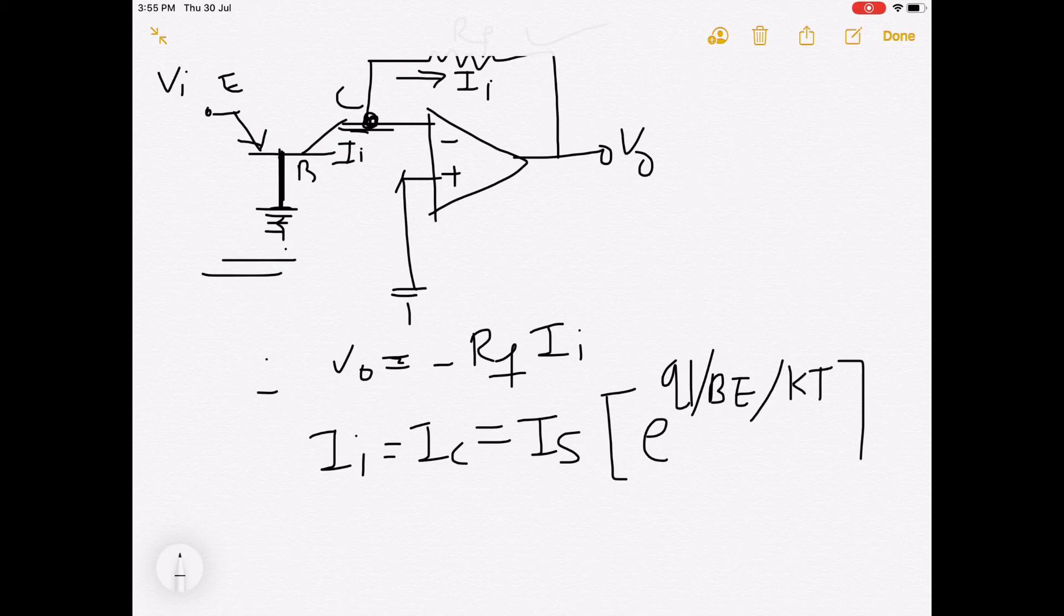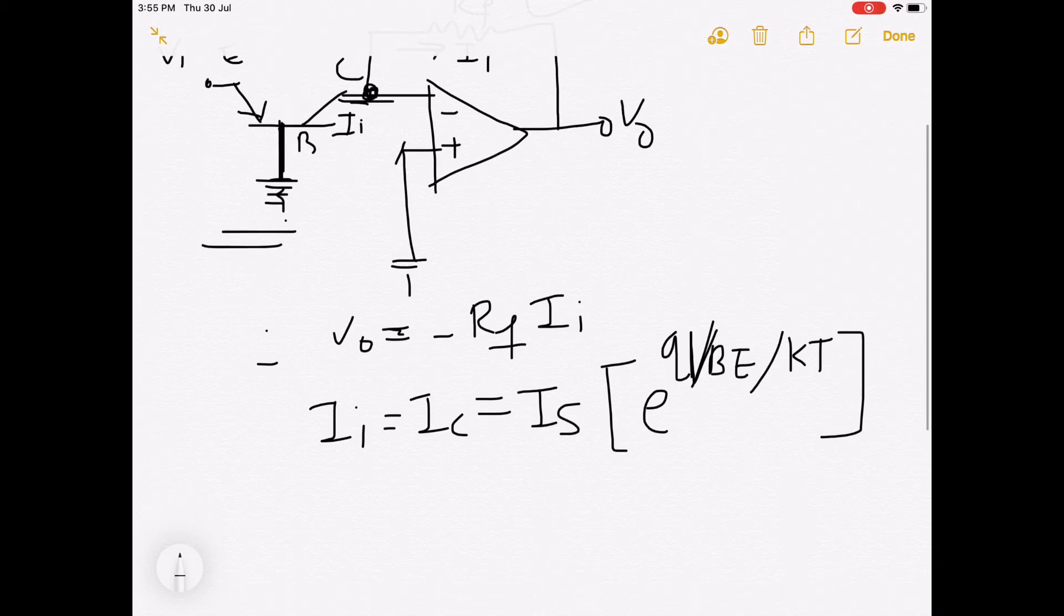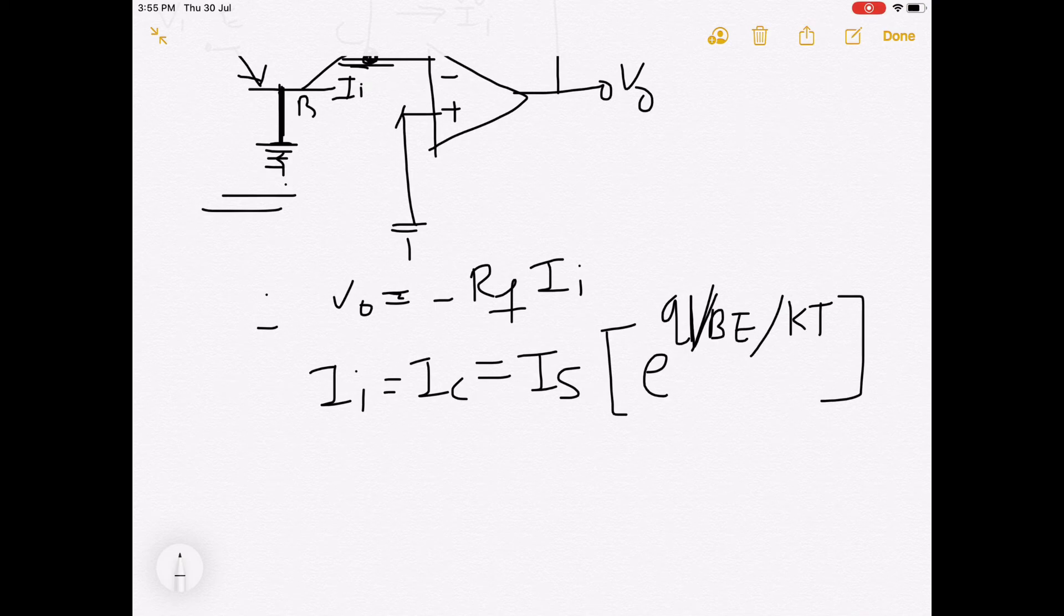kT is the thermal constant. Vbe is the base emitter voltage. This point we have seen in the logarithmic amplifier, so directly we are using this equation: collector current equals saturation current times e raised to qVbe upon kT.